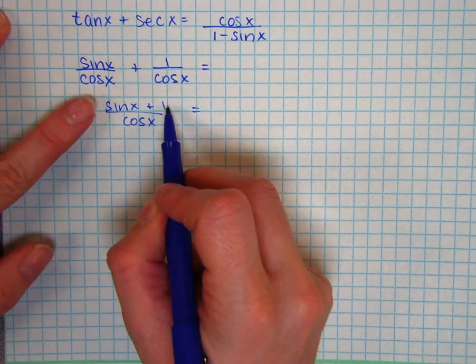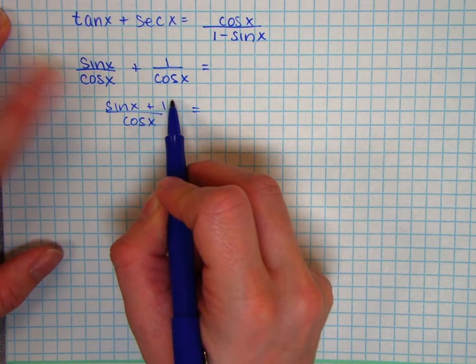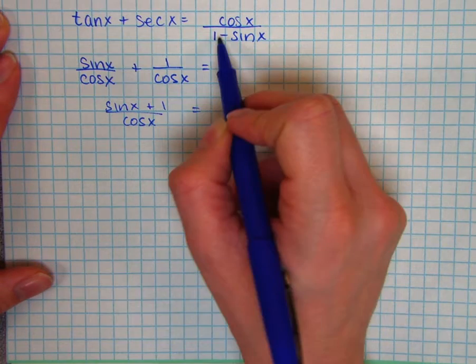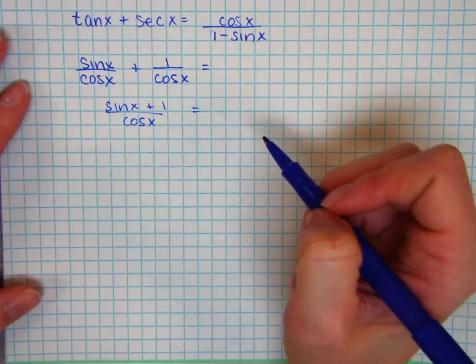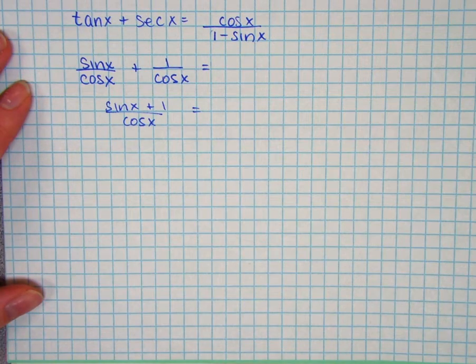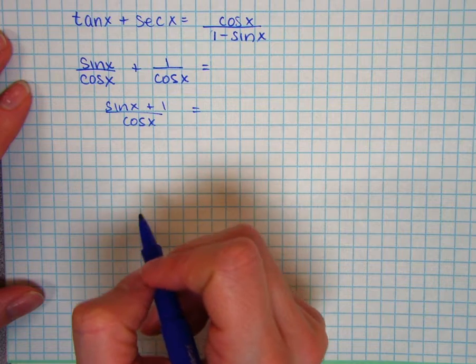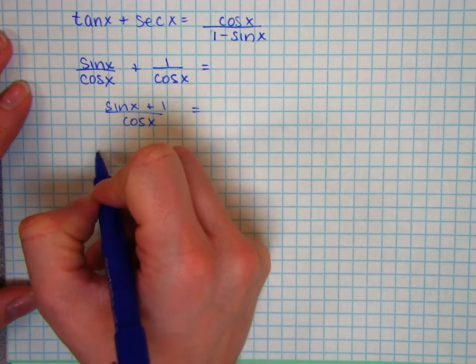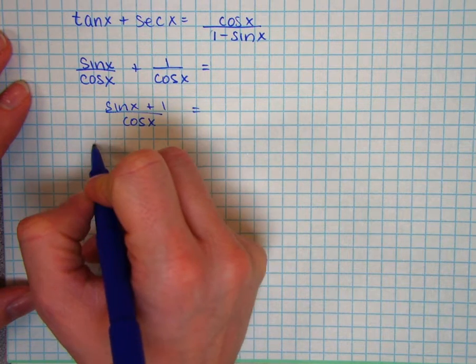And I want to get, I notice I have a sine of x plus 1 factor in my current expression. I want to get to a 1 minus sine of x. So this makes me think of the Pythagorean identities. So in each case, let's multiply by 1 minus sine of x.